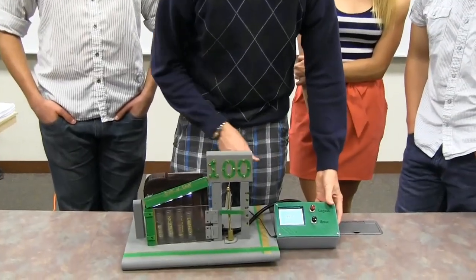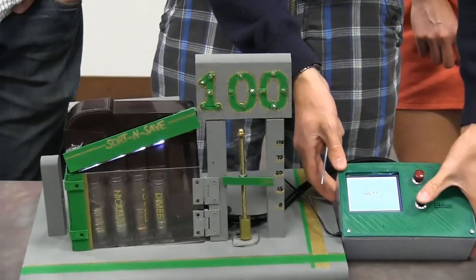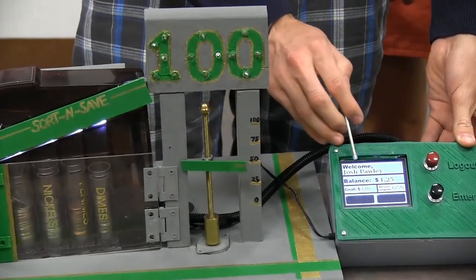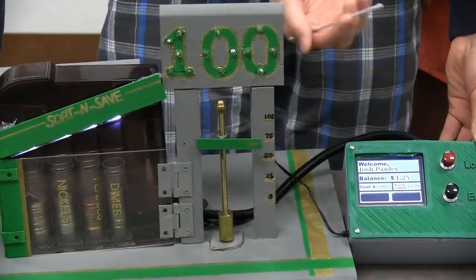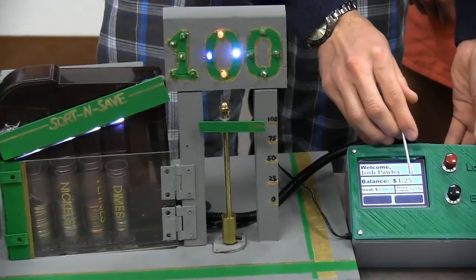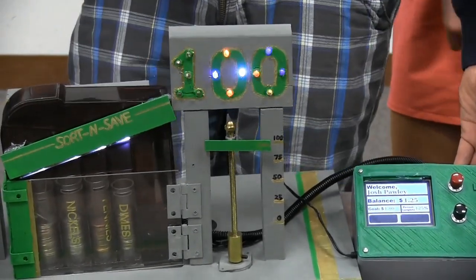We added 77 cents to Josh's account here, which should get him up to 100%. You can see it added the money to his account, so now he has $1.25. His goal is still $1, and he's at 125%. So the goal pole reflected that and went all the way back up.